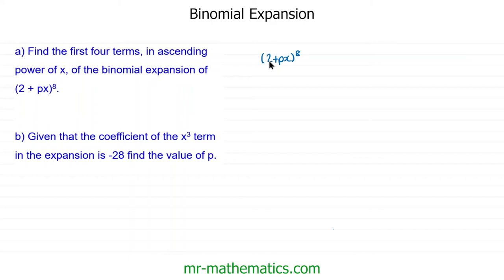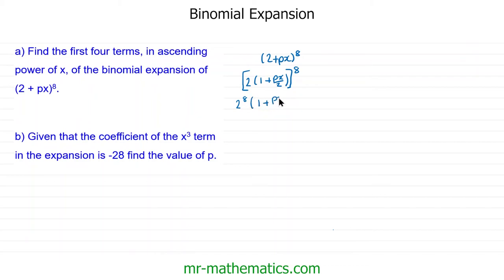First we'll factorize out the 2: two lots of (1 + px/2), all to the power of 8. Multiplying out the 2 and the power gives 2 to the 8 multiplied by (1 + px/2) to the power of 8. Now we can find the first four terms. We have 2 to the 8, then: 8 choice 0 is 1; 8 choice 1 is 8, times (px/2) to the power of 1.